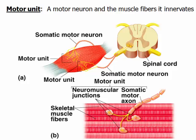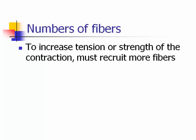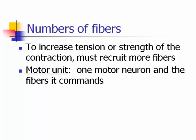A motor unit is a motor neuron and the muscle fibers it innervates. Coming from the spinal cord, one motor neuron splits at the end to several motor end plates, touching multiple fibers. To increase tension or strength of contraction, you must recruit — meaning bring on — more fibers. The more strength you need, the more fibers you need to turn on.